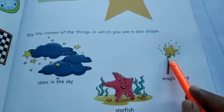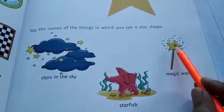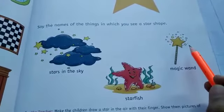Next, this is a magic wand. What is this? This is a magic wand. This is a star shape.